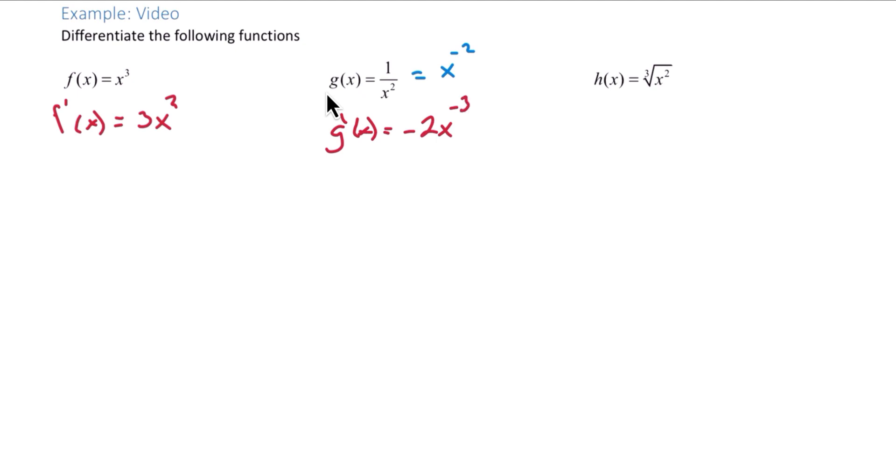And typically, we don't want to leave a negative exponent, so when possible, we will simplify that. So we'll rewrite that as negative 2 over x cubed.